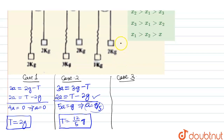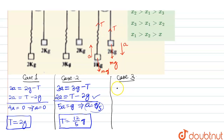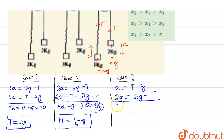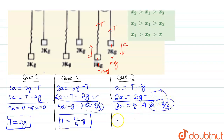In Case 3, let us consider the right side mass moves downward with acceleration a, and the left side mass moves upward with acceleration a. Gravitational force mg and tension T act on each block. From the free body diagram of the left side mass: a = T - g. From the free body diagram of the right side mass: 2a = 2g - T. Adding both equations: 3a = g, which implies a = g/3. Putting this value of a in, we get T = 4g/3.